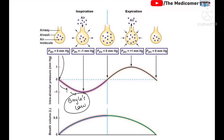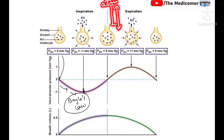From that point onwards, air starts entering the alveoli — more molecules come in. Because of these additional molecules, pressure now begins to increase and keeps increasing until it equalizes with atmospheric pressure. So by the end of inspiration, alveolar pressure again reaches atmospheric pressure.